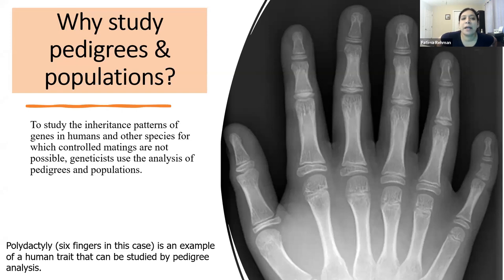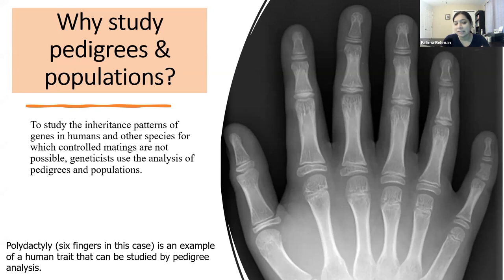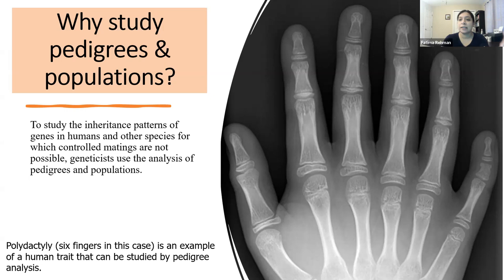So why should we study pedigrees and populations? Pedigrees are extremely important in studying the inheritance patterns of genes in humans and other species where you don't have thousands of progenies to work with, where we can't really control matings or control how things are present and behaving. In those cases, it is best to use pedigrees instead of just doing experiments with the organisms themselves, or just looking at different populations and seeing how they're changing given the environment.